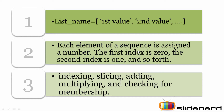Each element of a sequence or a list is assigned a number. The first index is the zeroth index, the second index is the first index, and so on. In simple language, your list is similar to an array. The first position value is always determined by index position zero, the second value by index position one, and so on.